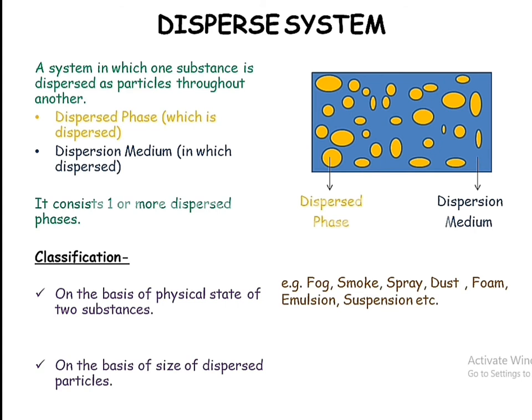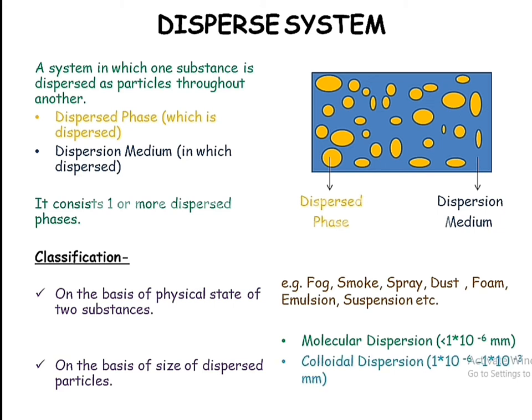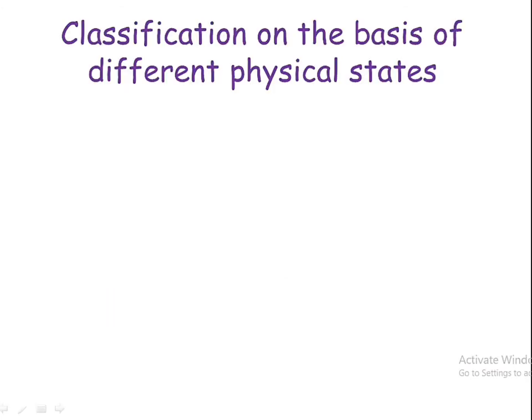Classification by particle size is subdivided into three categories. First is molecular dispersion, in which particle size is less than 10⁻⁶ mm. Second is colloidal dispersion, with particle size ranging from 10⁻⁶ to 10⁻³ mm. The last category is coarse dispersion, in which the particle size is larger than that of colloidal dispersion.